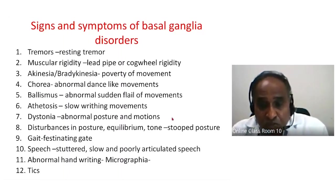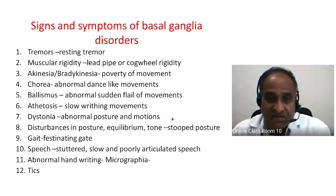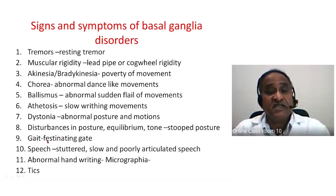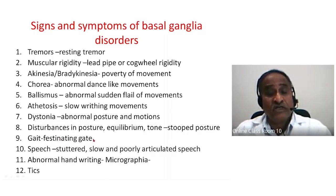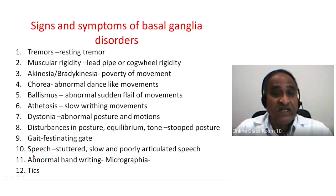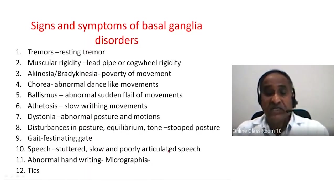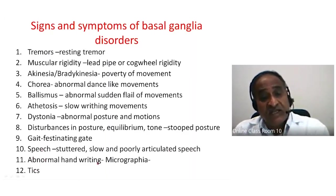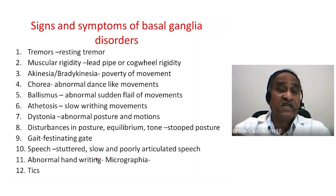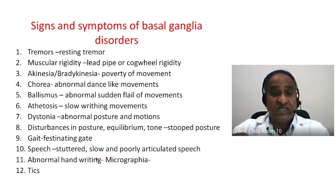Ninth is gait changes — the festinating gait, as though the person is counting steps: short, slow steps one after another. Tenth is speech — stuttered, slow, and poorly articulated due to akinesia, rigidity, and tremors. Eleventh is writing disorders — the patient cannot write fluently; scaling becomes minimal because of hypokinesia or bradykinesia, resulting in what is called micrographia.